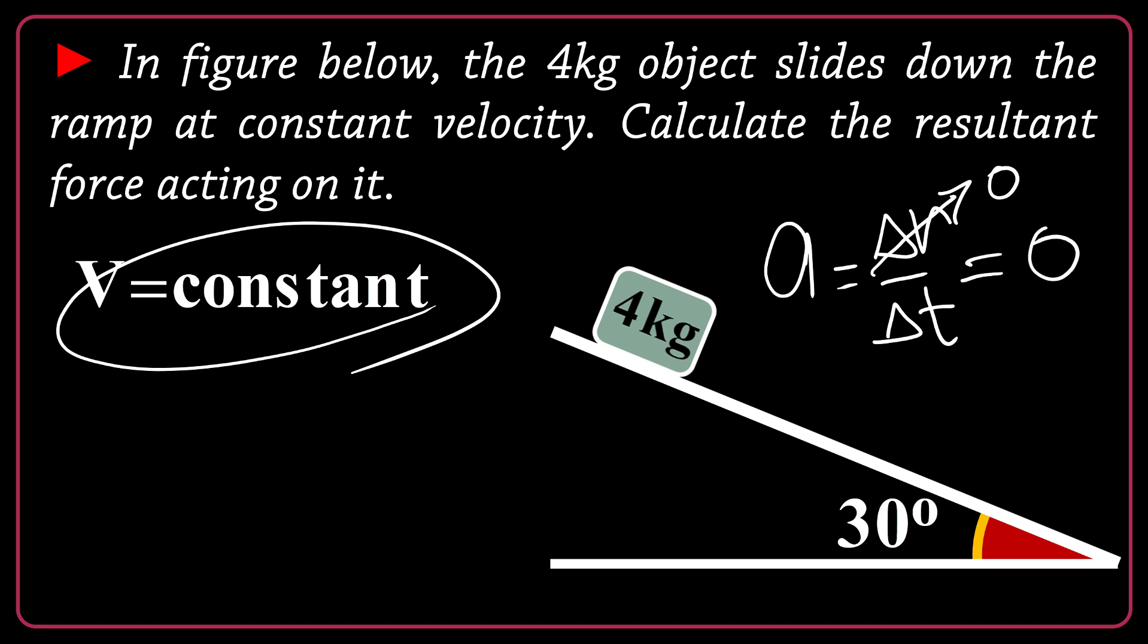So acceleration will be zero. If there is no acceleration according to Newton's second law of motion, F net is equal to MA. Although we have a mass of 4 kilogram, but as there is no acceleration, the product will be zero. So the net force acting on the object will be zero.